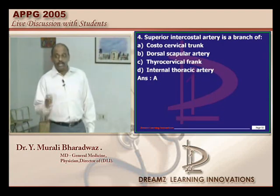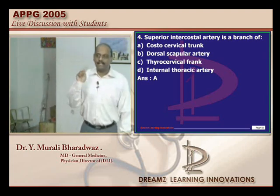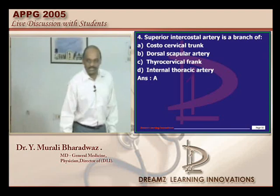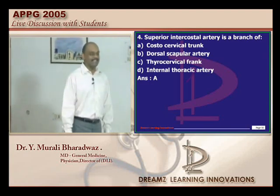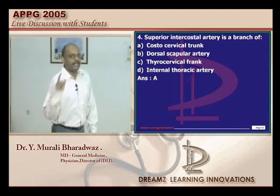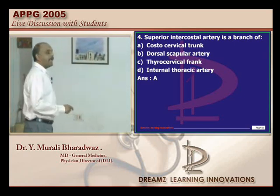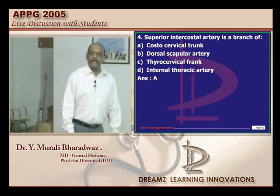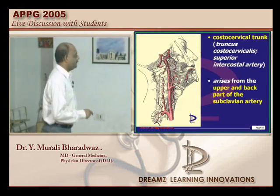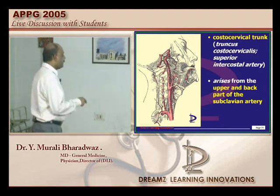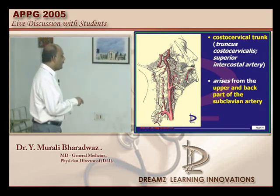For the next AP entrance question, brachial plexus will be the topic — master Erb's and Duchenne's palsy. The superior intercostal artery is a branch of the costocervical trunk. Typically the subclavian gives origin to the costocervical trunk, and the costocervical trunk gives rise to the first intercostal vessel — the superior intercostal artery.